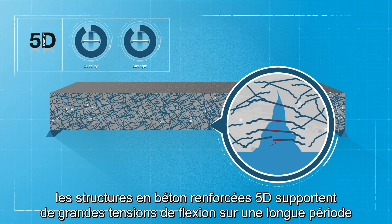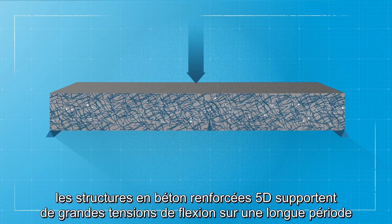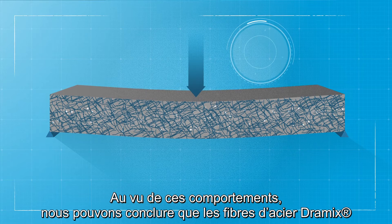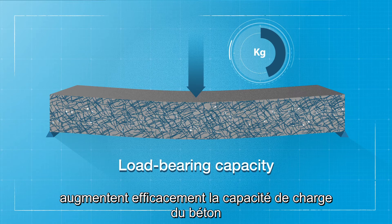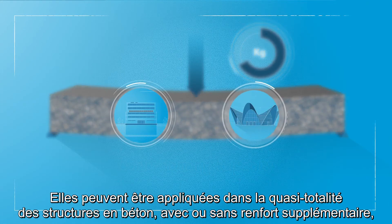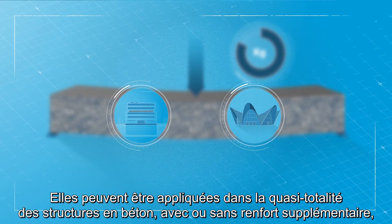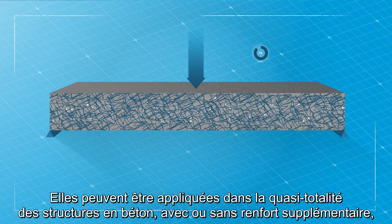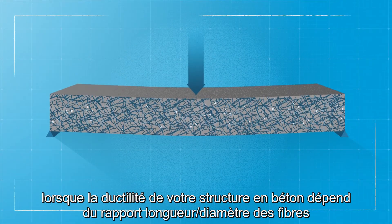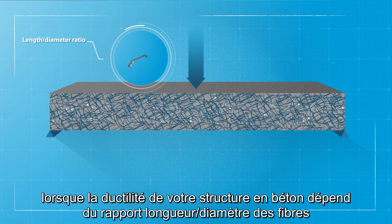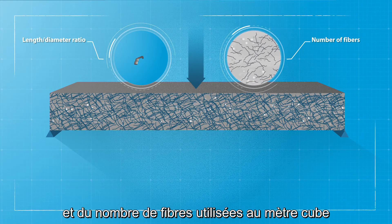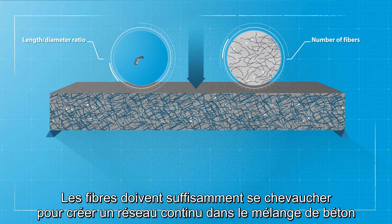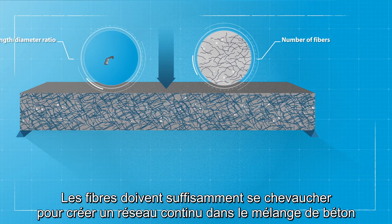With a tensile strength of 2,300 N per square millimeter and elongation of 6 percent, concrete structures reinforced with 5D can take high flexural stresses over a long period. Based on these behaviors, we can conclude that Dramix steel fibers effectively increase the load-bearing capacity of concrete. They can be used in almost any concrete structure, with or without additional reinforcement, where ductility depends on the length-diameter ratio of the fibers and the number of fibers used per cubic meter. It is essential that enough fibers overlap to create a continuous network in the concrete mix.